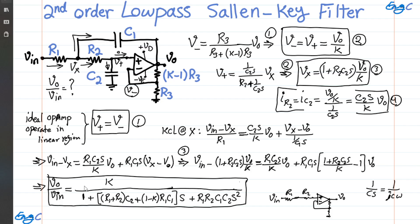This is the transfer function shown here. If you want to perform sinusoidal steady-state analysis, just replace s with jω: s becomes jω, and s² becomes j²ω², which is negative ω². From that we can find the magnitude and phase response of the transfer function. I hope that this is helpful.